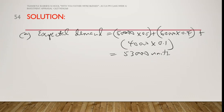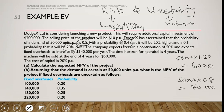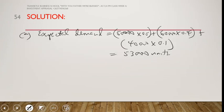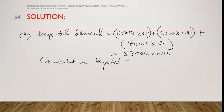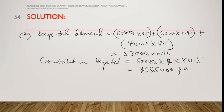Now for the expected contribution: the selling price is $10 per unit and the company expects to earn a contribution of 50%. The expected contribution is calculated as: 53,000 units multiplied by $10 per unit multiplied by 0.5, which gives us $265,000.